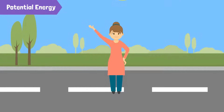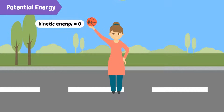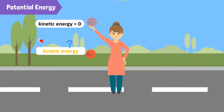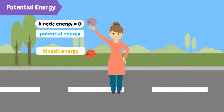If we now raise the ball to a certain height and release it, what happens? It starts falling downwards. It starts from a position of rest and then gains speed when you let it go. In other words, it starts with zero kinetic energy and then gains some kinetic energy. Where does this kinetic energy come from?